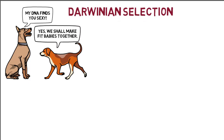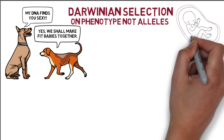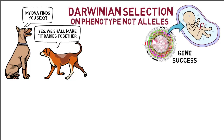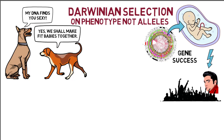Darwinian selection does not work on genes directly, but on their effects — the phenotype versus the allele — usually on embryonic development and therefore bodily form and behavior. Genes are successful if the environment influenced by all the genes has a beneficial effect on a shared embryo, making it more likely to develop into an adult and reproduce.